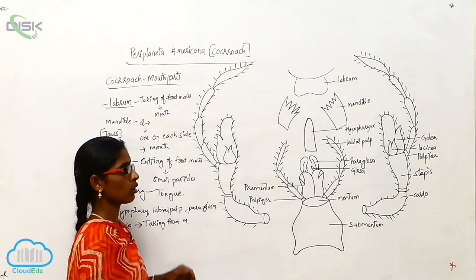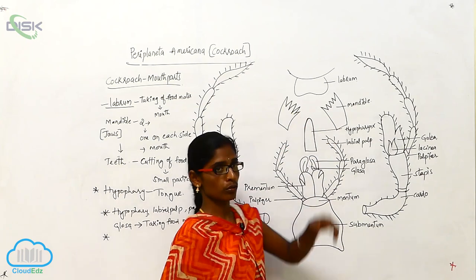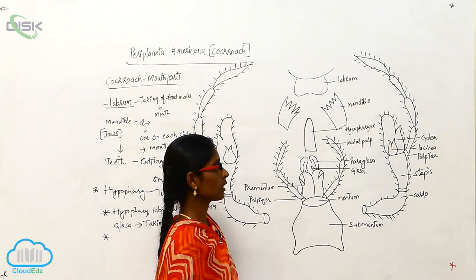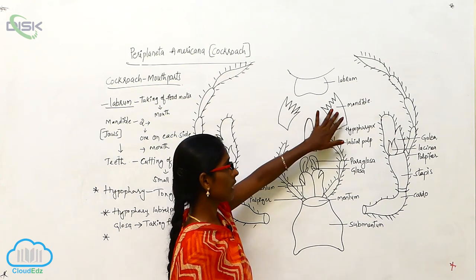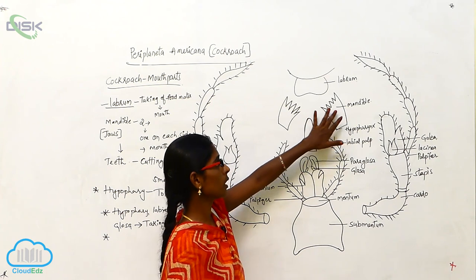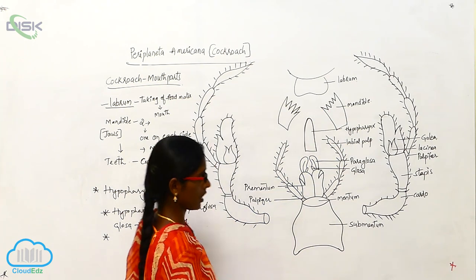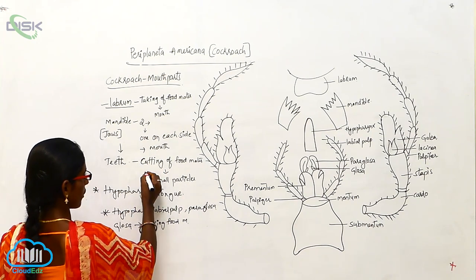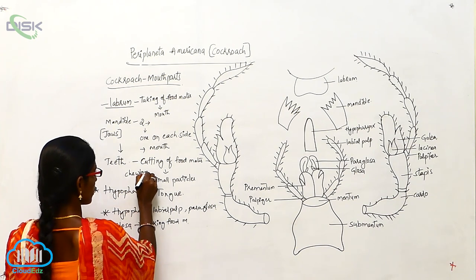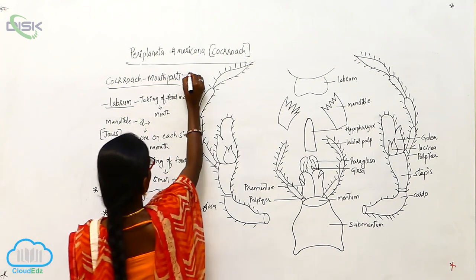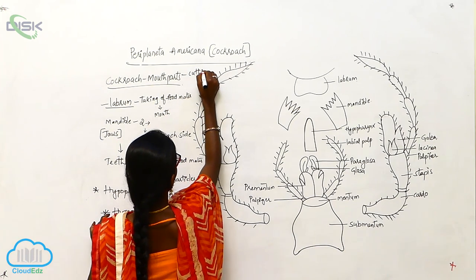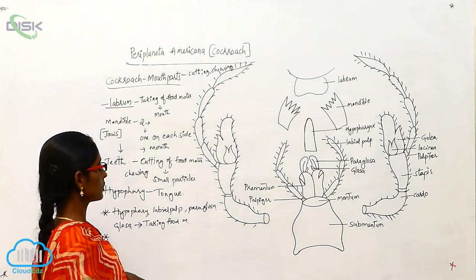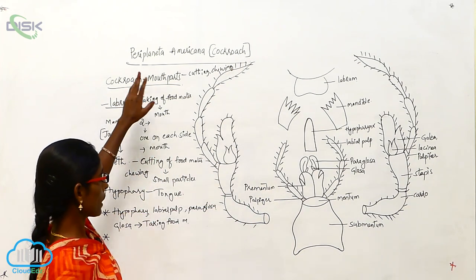The mandibles act like teeth. After eating, with the help of the mandible, the food material undergoes cutting and then chewing. So this is the cutting and chewing type of mouth parts found in Periplaneta americana.